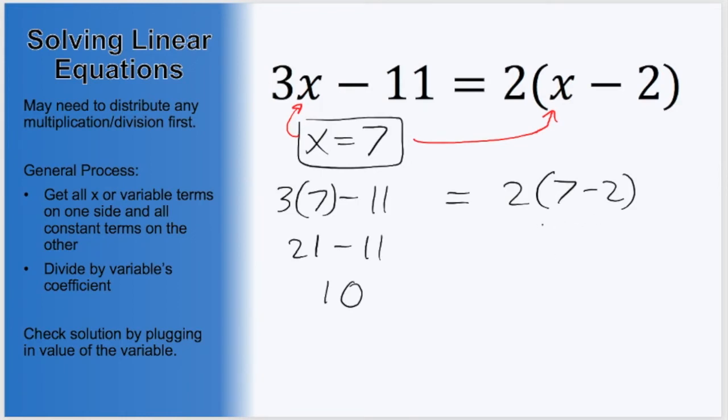Meanwhile, on the right side, we want to do the inside of the parentheses first, so 7 minus 2 is 5. Then it gets multiplied by 2, giving us 10. So we get the left side as 10 equals the right side, which is also 10. This is a true statement, so the value of x we got makes the equation true. And this confirms our answer.